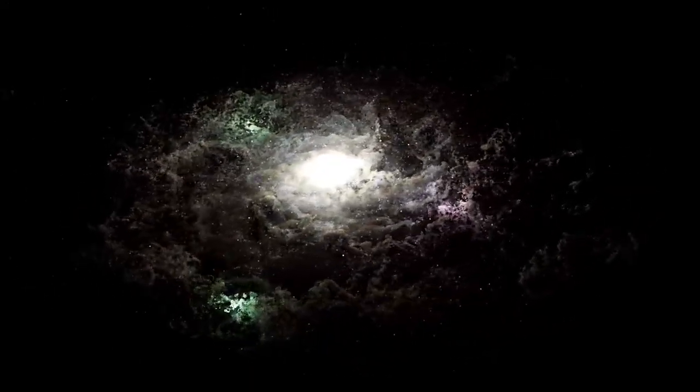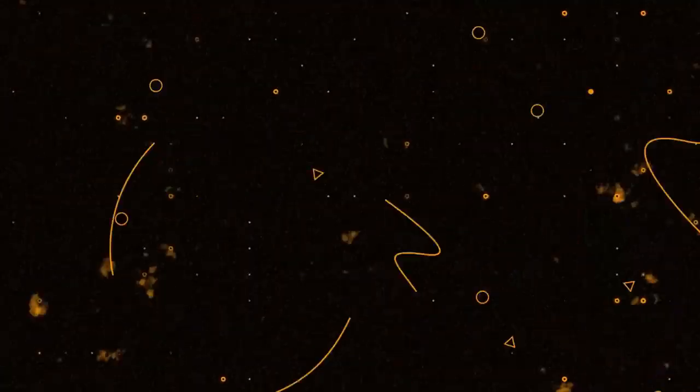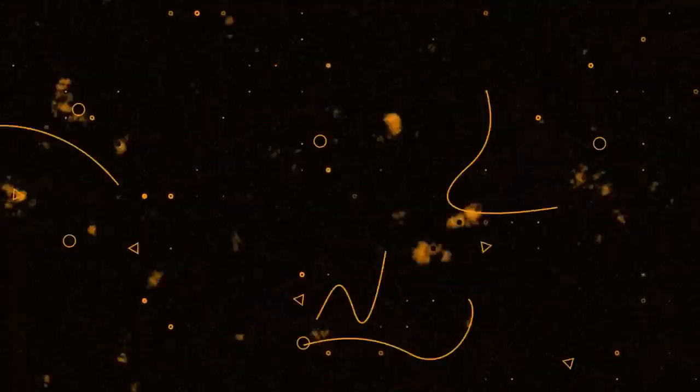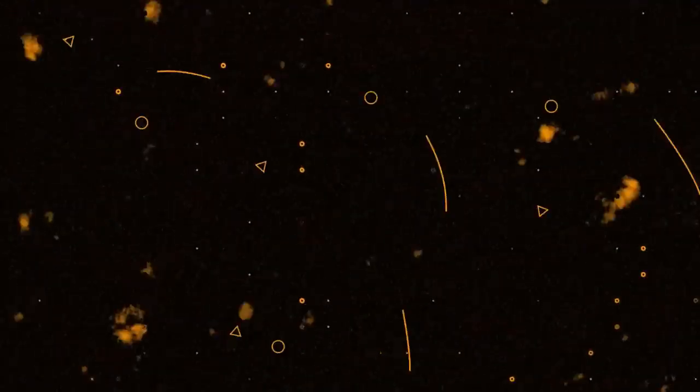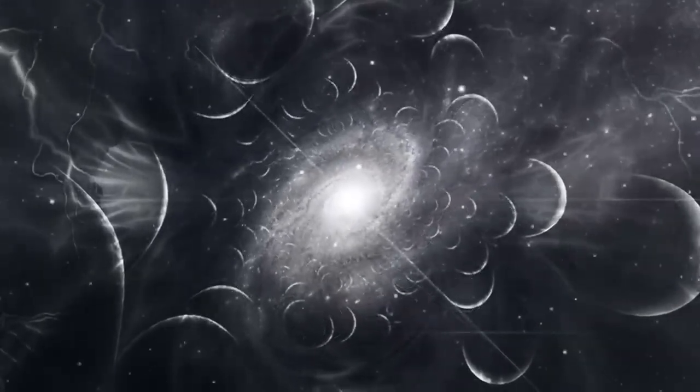The James Webb Telescope has also illuminated one of the universe's most elusive enigmas, dark matter. By observing gravitational lensing, where massive cosmic clusters bend light from objects behind them, Webb has helped create high-resolution maps of dark matter's distribution.